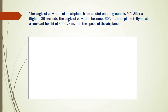Here we have a problem regarding an airplane. It is given that the angle of elevation of the airplane from a point on the ground is 60 degrees, and after a flight of 30 seconds the angle of elevation becomes 30 degrees. If the airplane is flying at a constant height of 3000 root 3 meters, we have to find the speed of that airplane.